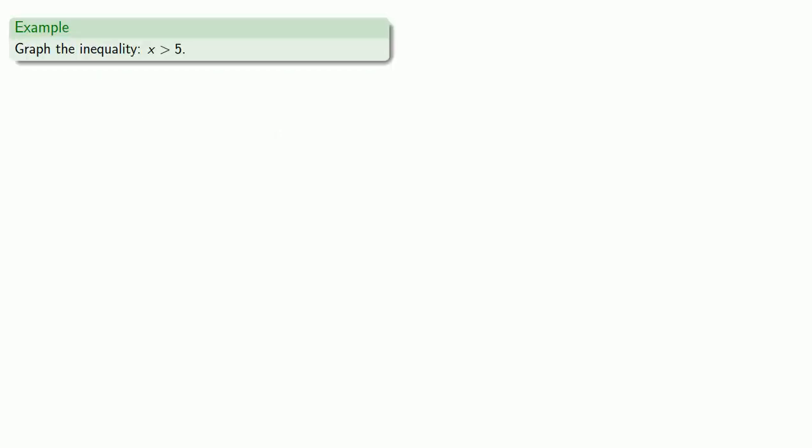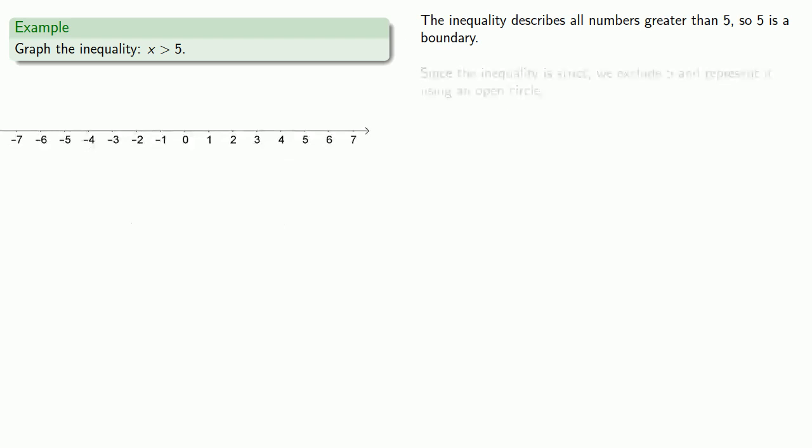For example, suppose I want to graph the inequality x greater than 5. Now the inequality describes all numbers greater than 5, so 5 is a boundary. So let's put down our number line. Since the inequality is strict, we're not allowed to actually equal 5, we exclude 5 and represent it using an open circle.